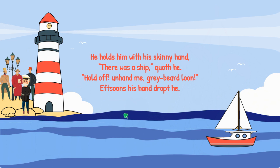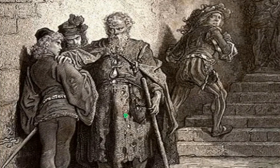He holds him with a skinny hand: 'There was a ship,' said he. 'Hold off, unhand me, grey-beard loon!' — 'loon' meaning lunatic. 'Eftsoons his hand dropped he' — 'eftsoons' meaning immediately. There are a series of paintings by Gustave Doré about this poem, and we see the wedding guests — the three of them — with one stopped by the mariner, showing his lunatic appearance with long grey beard and hair, and his bold, striking eyes.